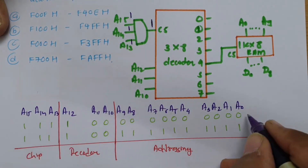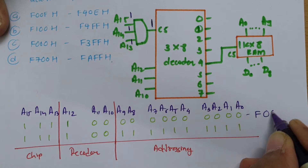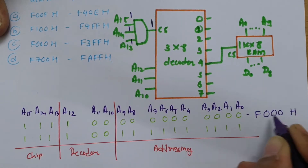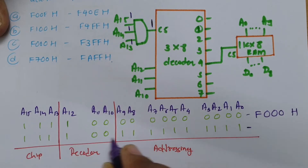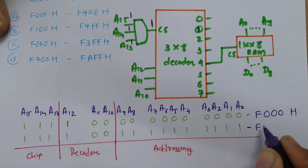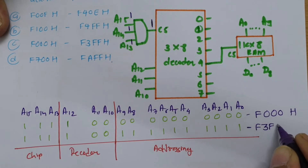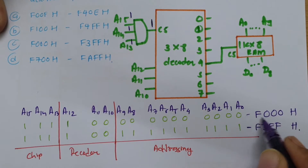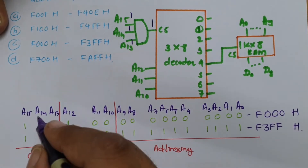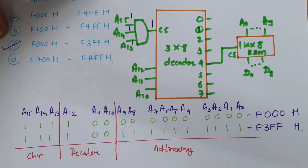The starting address is 1111 0000 0000 0000 in binary. Converting to hex: 1111=F, 0000=0, 0000=0, 0000=0 — so starting address is F000h. The ending address with all addressing bits set to 1 is 1111 0011 1111 1111 = F3FFh. So the correct answer is option C: F000h to F3FFh.